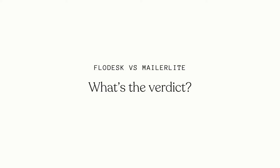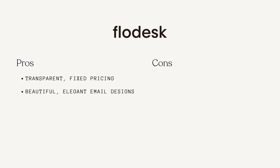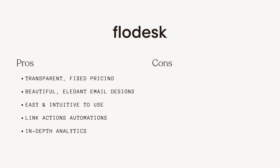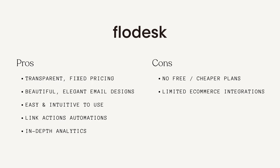Let's talk about the overall pros and cons. With Flodesk, I love the transparent fixed pricing — no matter how many subscribers you get you're not penalized for your list growing. Plus you can get an extra 50% off your first year using my link in the description. They have beautifully intuitive elegant email and sign-up form templates, the link actions automation feature is really powerful, and their in-depth analytics are easy to access. The cons are that there's no free or cheaper plan, which might be off-putting for beginners, and there are currently quite limited e-commerce integrations, though they are adding more all the time.